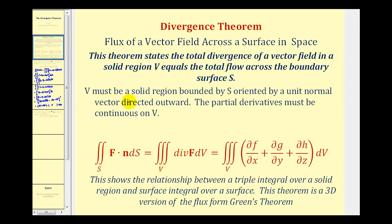The conditions are that V must be a solid region bounded by S oriented by a unit normal vector directed outward, and our partial derivatives for div F must be continuous on V.